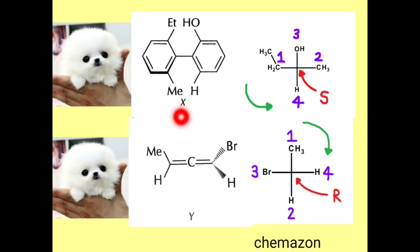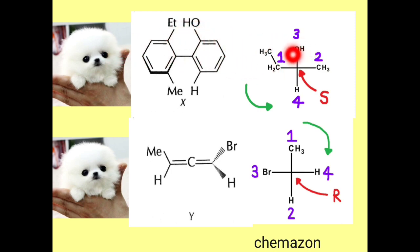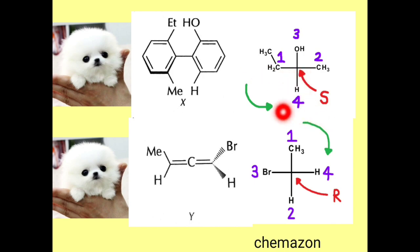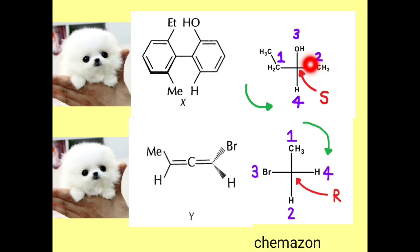Looking at molecule X from the observer's point of view, the methyl group is on the right, the ethyl group on the left, OH in front, and hydrogen down. From 1 to 2 to 3 the direction is anticlockwise, so the absolute configuration is S. The groups coming towards you get the first and second priority; methyl and ethyl are assigned priority 1 and 2 according to atomic number.